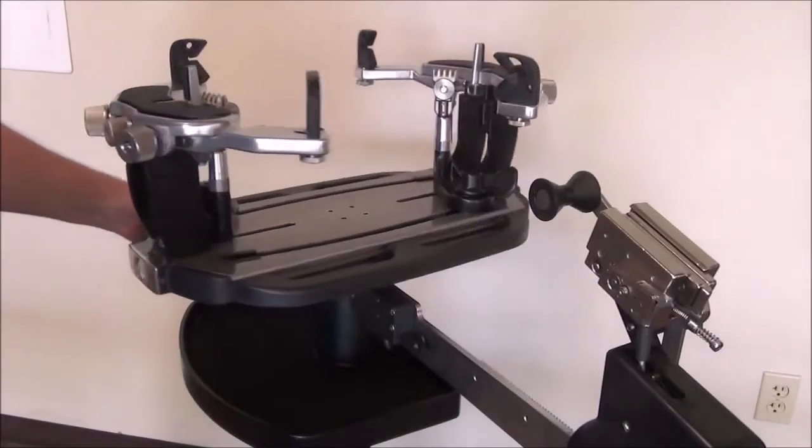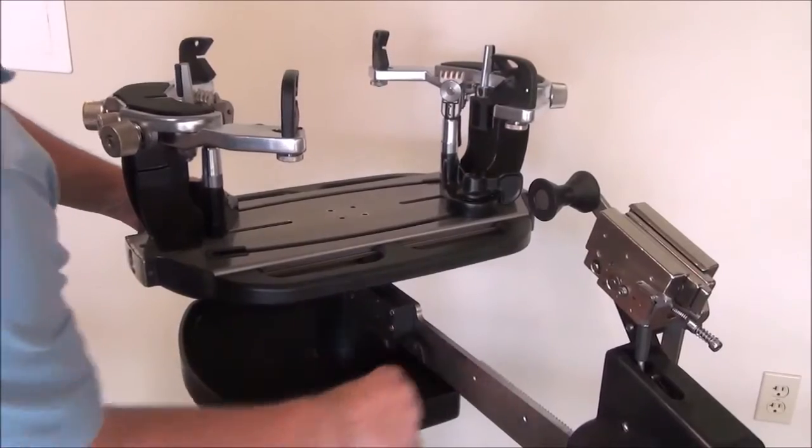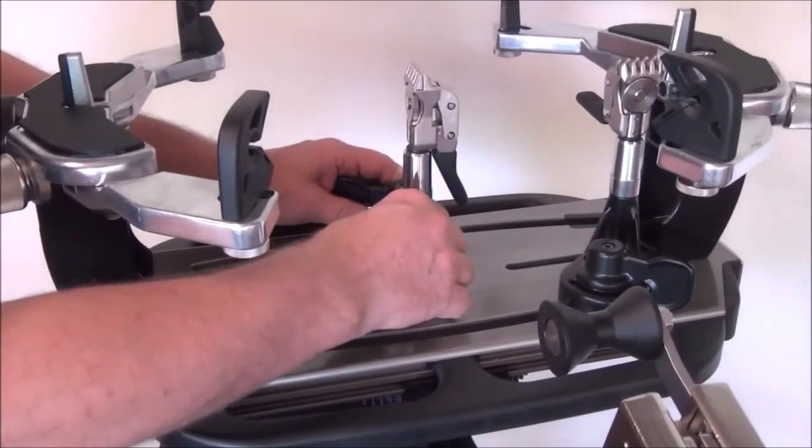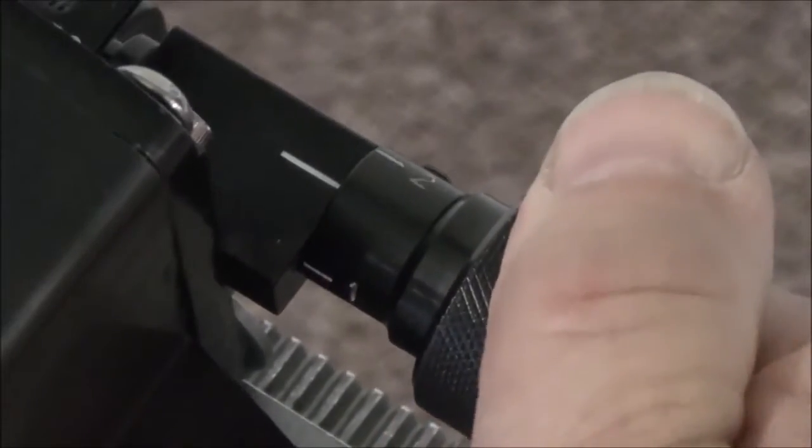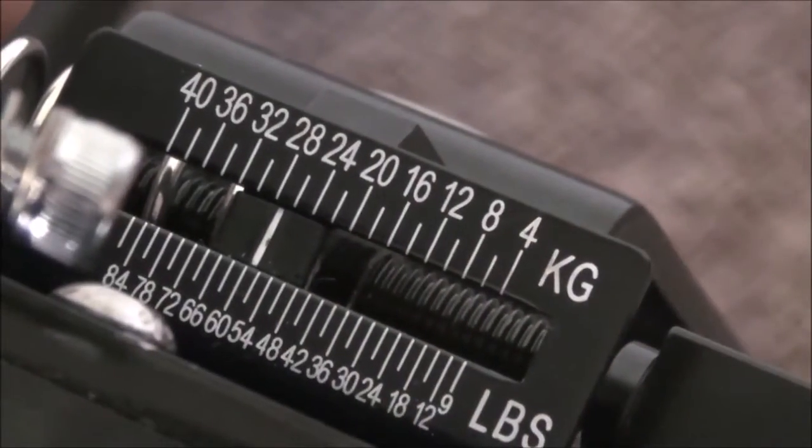The first step is to rotate the turntable 90 degrees and lock the turntable brake. Then center a string and base clamp on the turntable and lock it into place. Set the tension to 60 pounds on the linear tension scale.